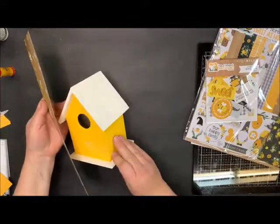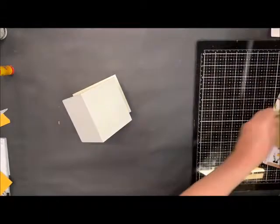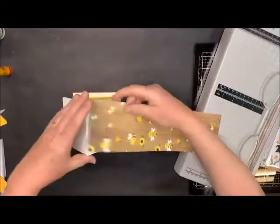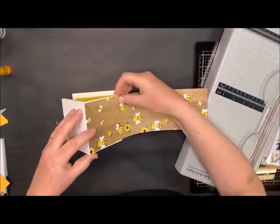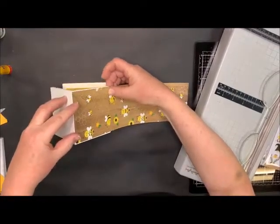First we're going to cut the paper for the roof. I've got this already measured out here, about three and a half inches. The sides vary, so don't assume that both sides are going to be exact.